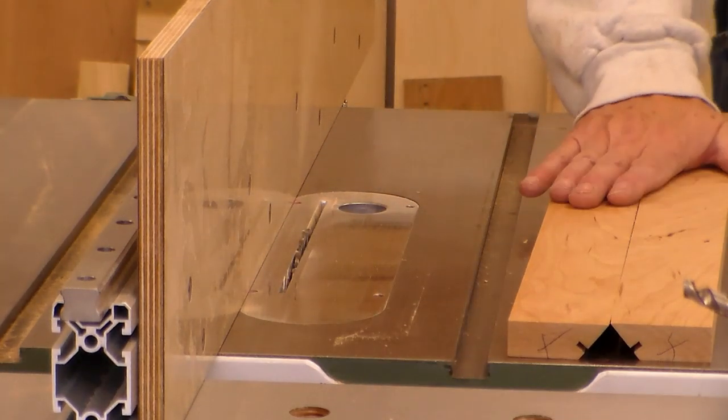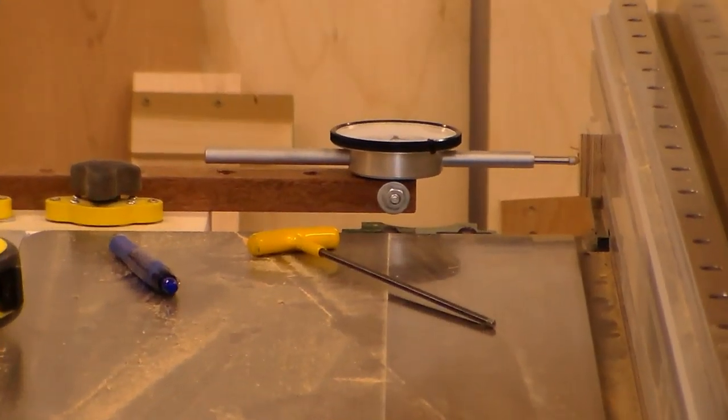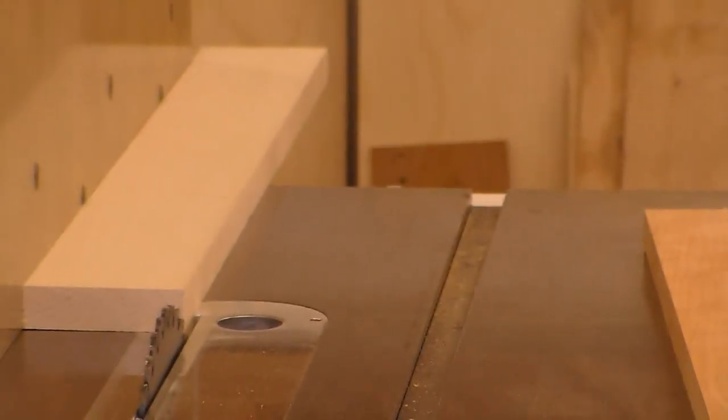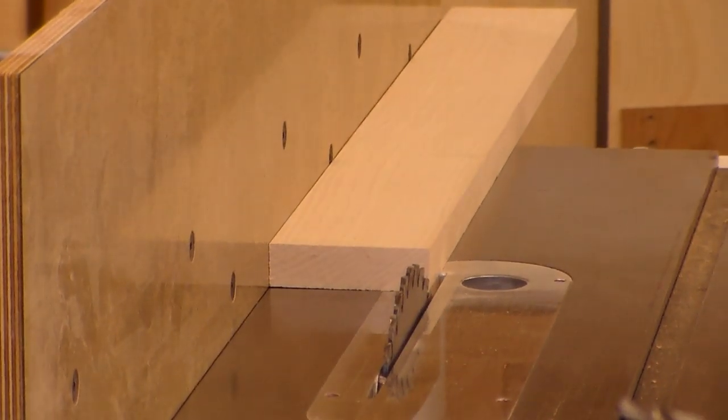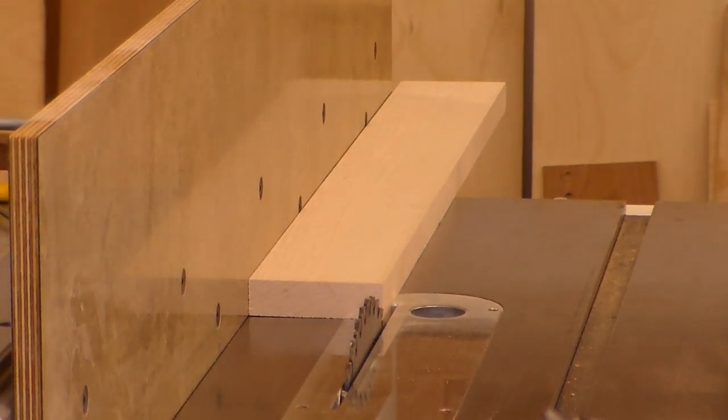I think I'm going to make my splines out of maple. Okay, I've got my dial indicator set up and it's zeroed out. And what I'm going to do is, let me move this over, I'm going to make a little skim cut on this piece of maple.